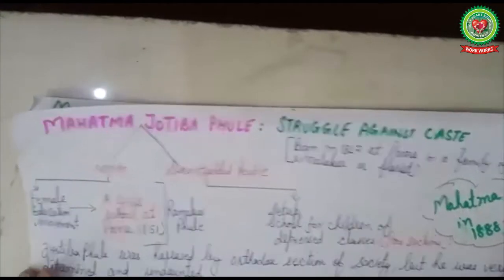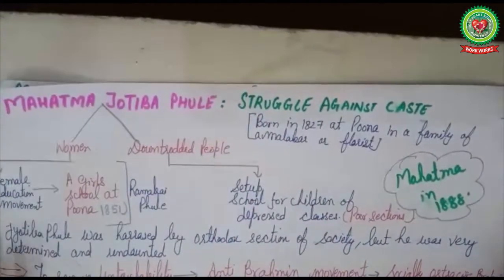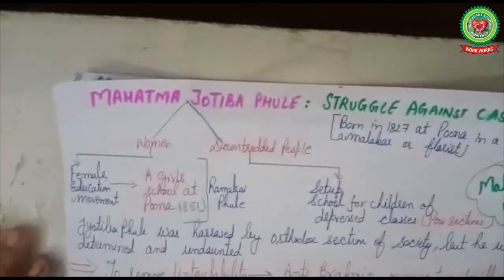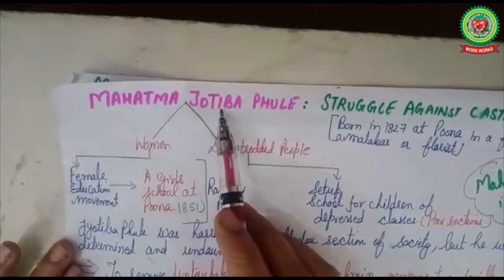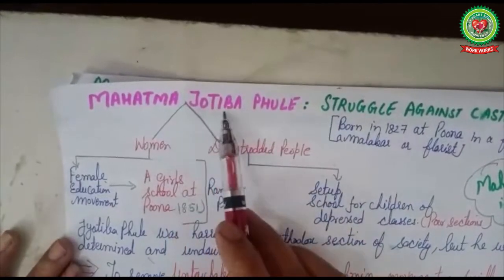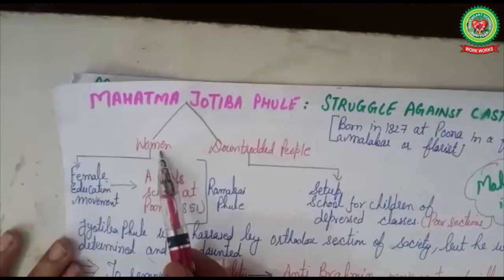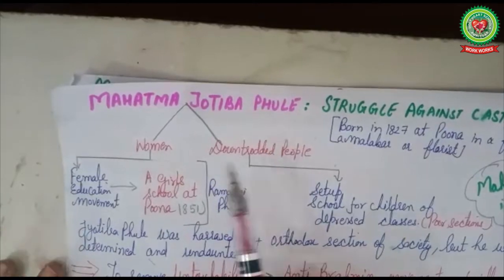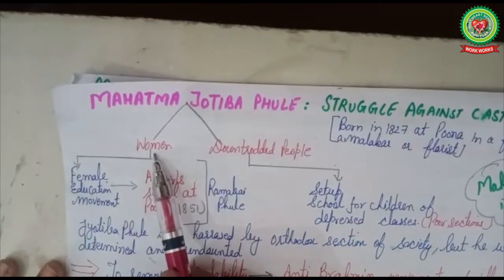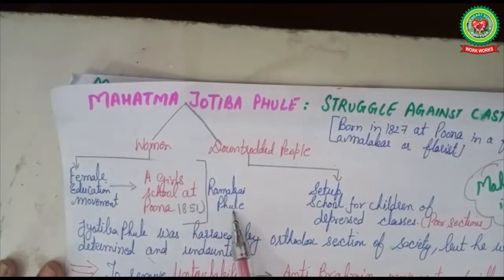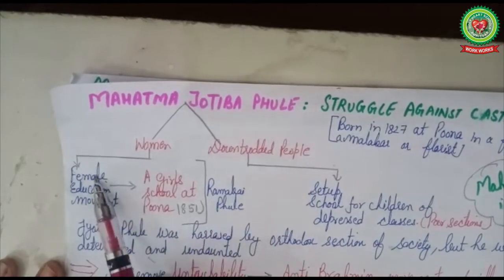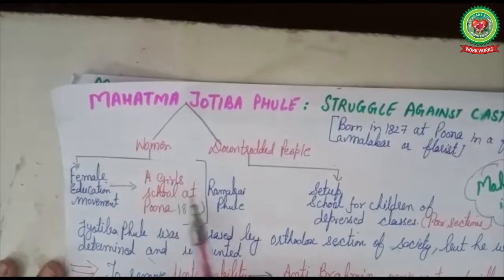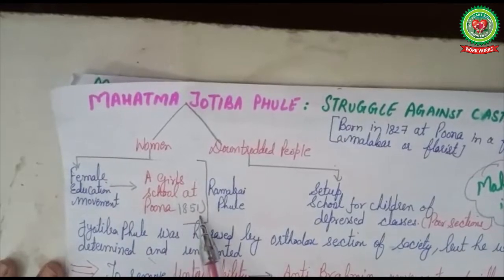In this session we are going to discuss those reformers who stood against the caste system. We will start with the contribution of Mahatma Jyotiba Phule. Mahatma Jyotiba Phule worked for women's empowerment and downtrodden people. In the area of women's empowerment, along with his wife Ramabai Fule, he worked for the female education movement and set up a girls' school at Pune in 1851.